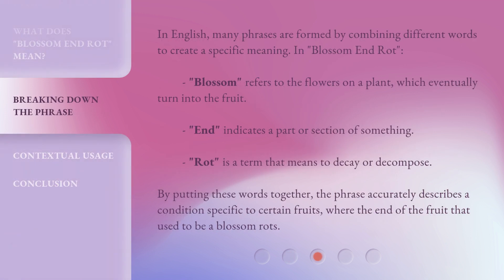In English, many phrases are formed by combining different words to create a specific meaning. In 'Blossom and Rot': 'Blossom' refers to the flowers on a plant, which eventually turn into the fruit. 'End' indicates a part or section of something. 'Rot' is a term that means to decay or decompose. By putting these words together, the phrase accurately describes a condition specific to certain fruits, where the end of the fruit that used to be a blossom rots.